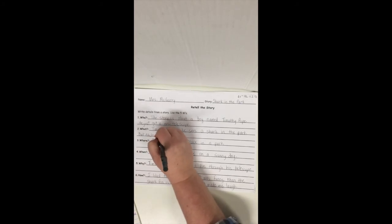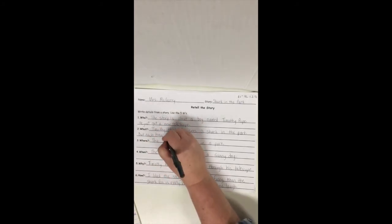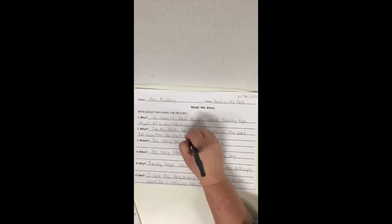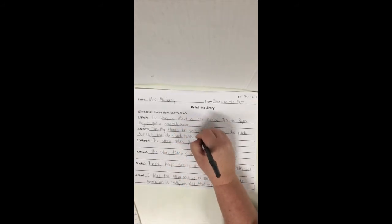Okay. You could also say he took it to the park to try it out. Something to describe Timothy a little bit more. Now what? We said Timothy thinks he sees a shark in the park. Why does he keep thinking he sees a shark? I want some more details with that. So I'm going to say, but each time the shark turns out to be something else.